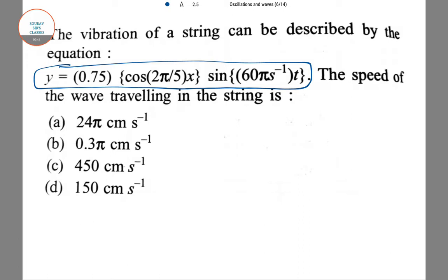We will compare it with the standard equation structure, which is y = A cos(2π/λ)x sin(2π/T)t. Comparing, we get 2π/5 = 2π/λ, which gives λ = 5 directly.